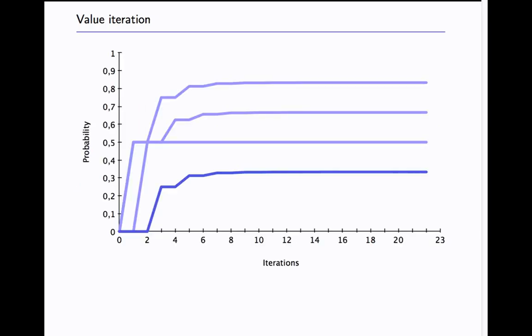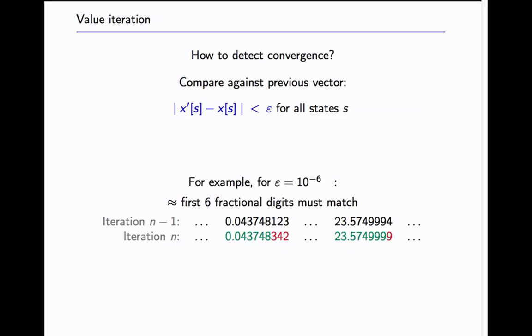One can plot this and for a quite simple Markov chain we see the different convergence for the different states. What appears here as a straight line is actually still converging on the real result. They are a little bit going nearer and nearer to the real result. Then the question becomes how do we detect convergence or when are we sure we can stop. In practice what is used and implemented in these model checkers is a comparison between the previous and the new vector. You look at each element for each state and if the difference is smaller than a certain user defined precision parameter you terminate.